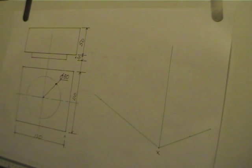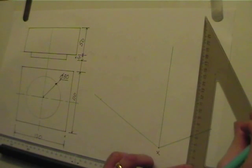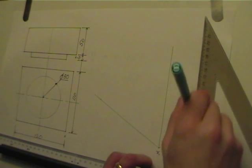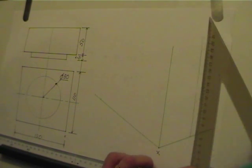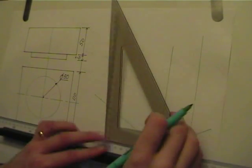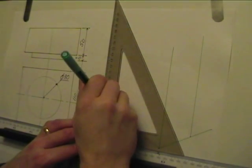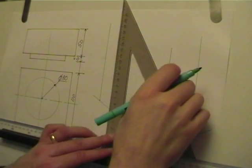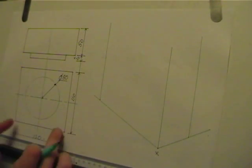I take my 60-30 set square again. Construct another construction line up the page. Slide my set square along again and construct another construction line. That's me beginning to form the box.